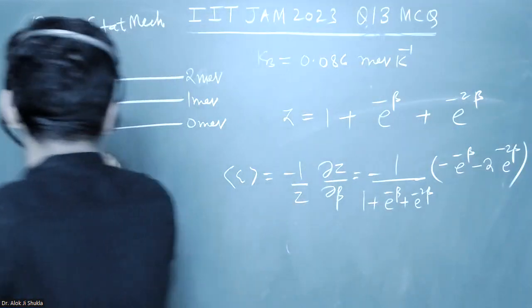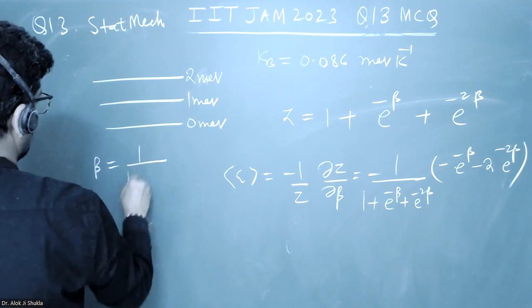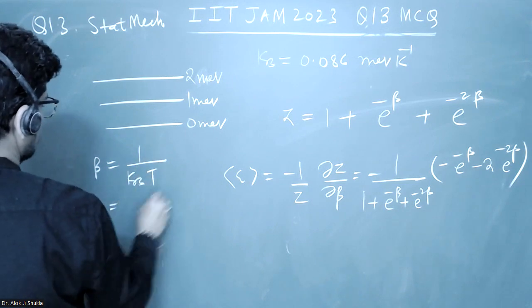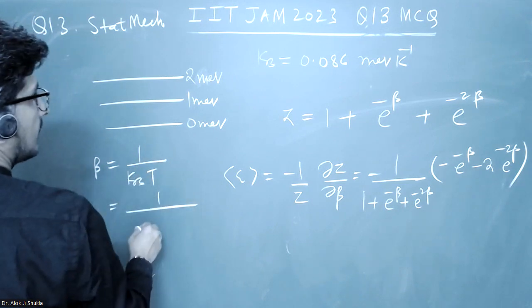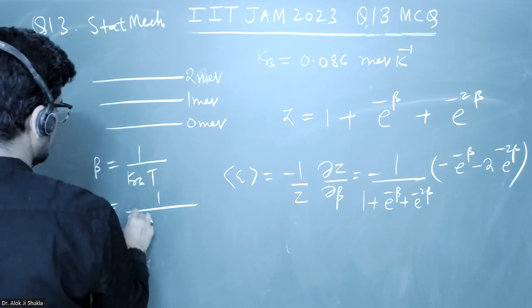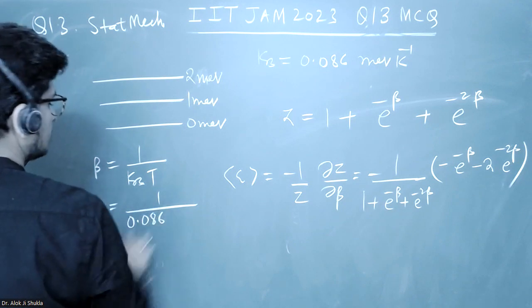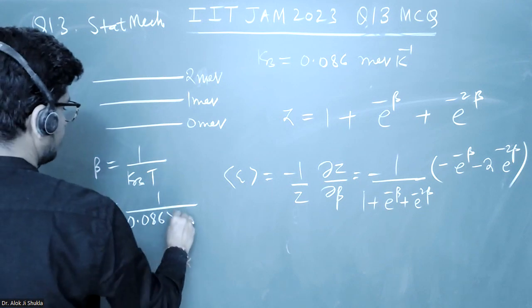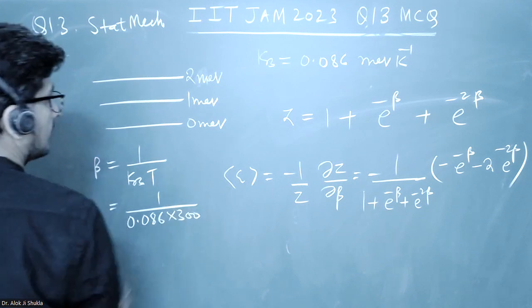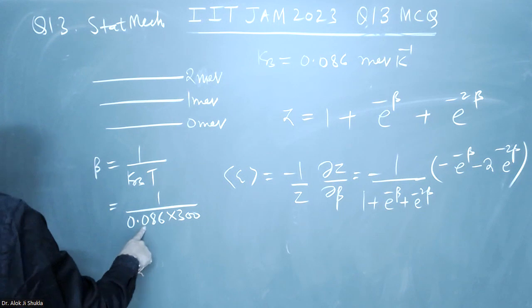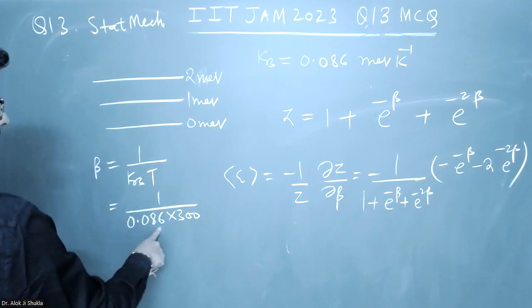beta is equal to 1 upon KB T, so which is 1 upon KB is 0.086 into this will be 300. So this will be in milli electron volt and it will be cancelled with this milli electron.